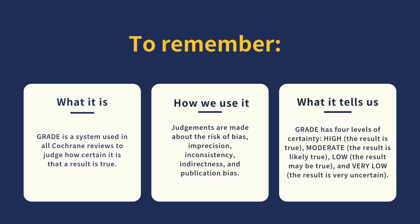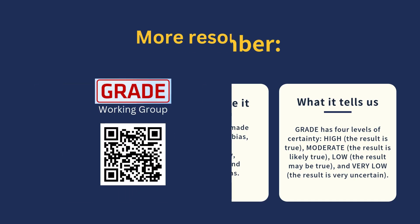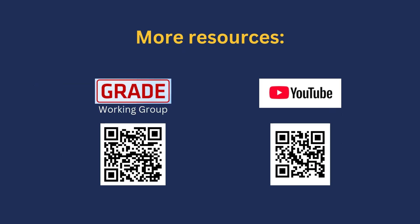GRADE is a system used in all Cochrane reviews to evaluate and express how certain the authors are that a result from the review is true. We use it by making judgments about the risk of bias, imprecision, inconsistency, indirectness, and publication bias. GRADE tells us that there are four levels of certainty. If certainty is high, we think the result is true. If certainty is moderate or low, we are less certain. And if certainty is very low, we are very uncertain whether the result is true. Thank you for watching this Evidence for Everyone video from Cochrane Complementary Medicine. You can find more videos like this, as well as other informational resources, at the links provided here.